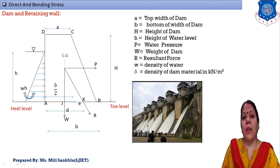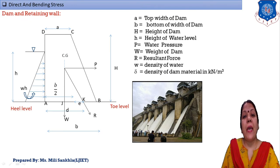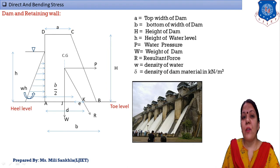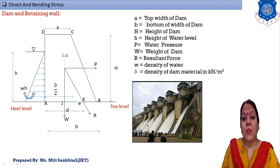Here is the side section of the pier, dam section, or retaining wall. The full forms of all terms: 'a' = top width of dam, 'b' = bottom width of dam, 'H' = height of dam, 'h' = height of water level, 'P' = water pressure (water is stored on one side making pressure), 'W' (capital) = self weight of dam acting downward due to gravity.